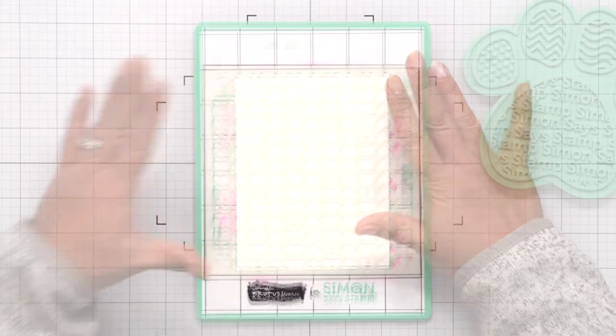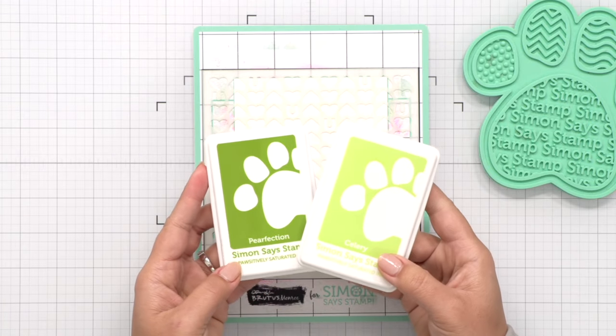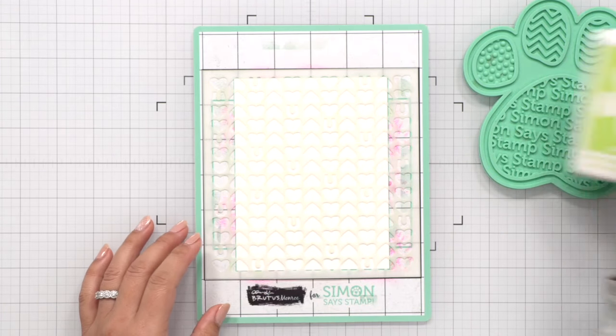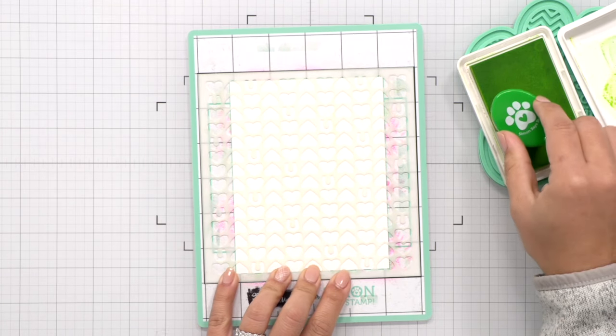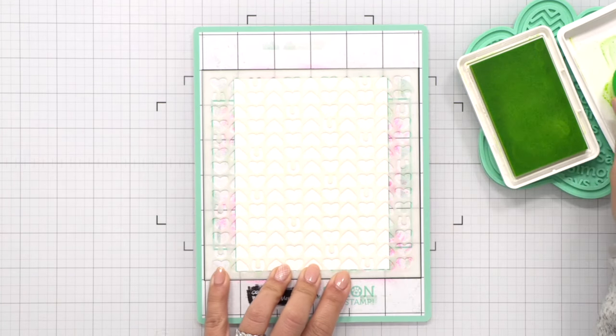On a stamp and stencil mat, I've centered my card panel which is A2 sized and the grid lines perfectly line up your paper as well as the stencil and it's my favorite tool for ink blending stenciled backgrounds.